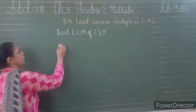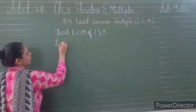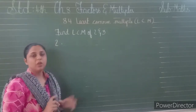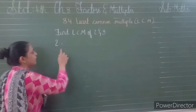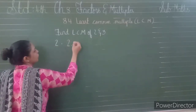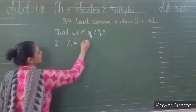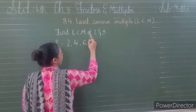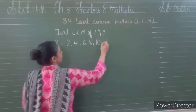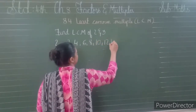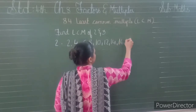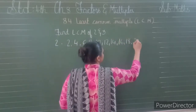So let us start. First of all, find out the multiples of 2. I have already taught you how to find out the multiples of 2 in our previous video. Jaise ke 2 ka hume sirf table hi likhna hai: 2 ones are 2, 2 twos are 4, 3s are 6, 2 fours are 8, 2 fives are 10, 2 sixes are 12, 2 sevens are 14, 2 eights are 16, 2 nines are 18, and 2 tens are 20.